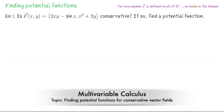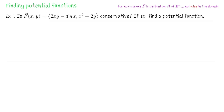We've seen conservative vector fields and looked at a test that works if our vector field is defined on all of R2 or all of R3. As of right now, we are not considering vector fields which may have holes in the domain — places where they're undefined. Such a vector field is this one: f(x, y) equals 2xy minus sin x, x squared plus 2y. This is a nice vector field defined on all of R2. Is this vector field conservative? We'll apply our test to figure that out.